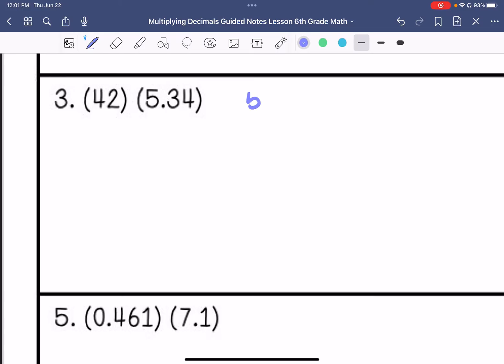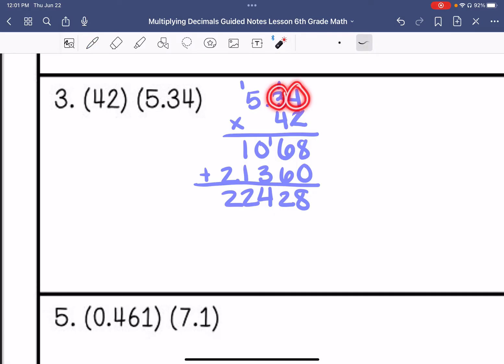Alright, we have 5.34 times 42. 2 times 4 is 8. 2 times 3 is 6. 2 times 5 is 10. Cross it out with that placeholder. 4 times 4 is 16. 4 times 3 is 12. Plus that 1 is 13. And then 4 times 5 is 20. Plus that 1 is 21. You are going to add these. And then I count 1, 2. So 1, 2. So my answer is 224.28.